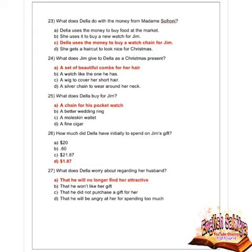Next question: what does Della buy for Jim? Given options are a chain for his pocket watch, a better wedding ring, a Malky's wallet, and a fine cigar. Option A is correct — a chain for his pocket watch.